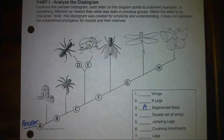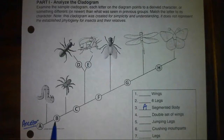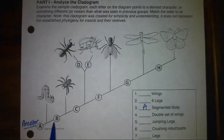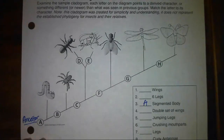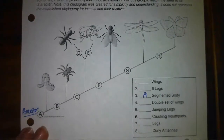Next, trait B is going to be a trait that this worm does not have, but all the rest of the organisms have. So what trait does the worm not have, but all the rest of the organisms have? That would be legs.